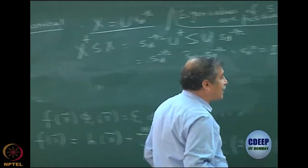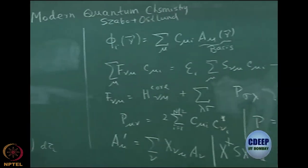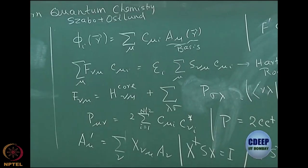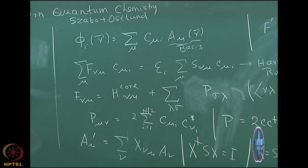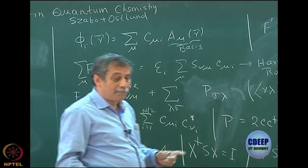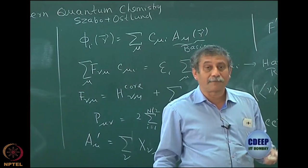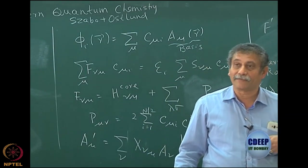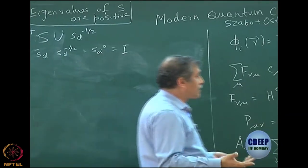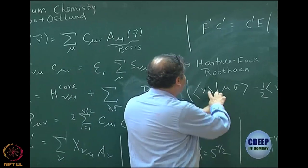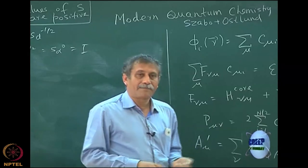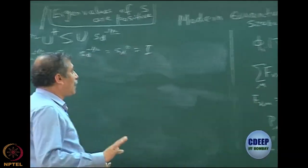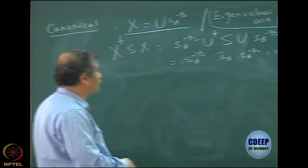Let me come back to the analysis of the P matrix. Before that, please remember that the Szabo and Ostlund symbols are different from what we use: spin orbitals are chi, molecular orbitals are psi (instead of phi), and the basis functions are phi (instead of A). The Mulliken notation difference is simple — interchange the second and third indices. You can always go back and forth between notations. Most of the material is from that textbook.